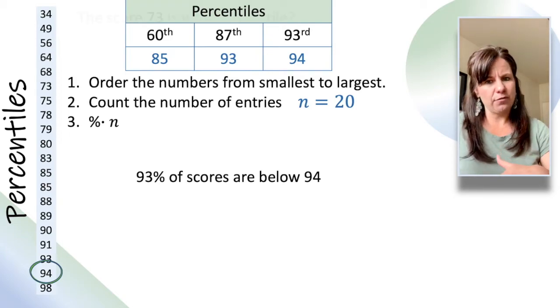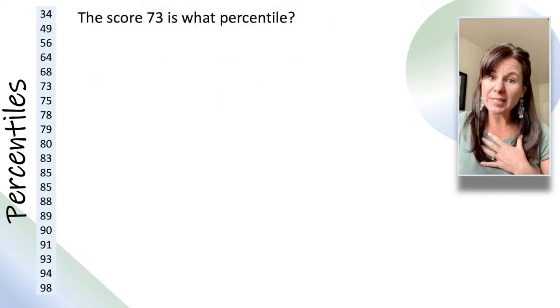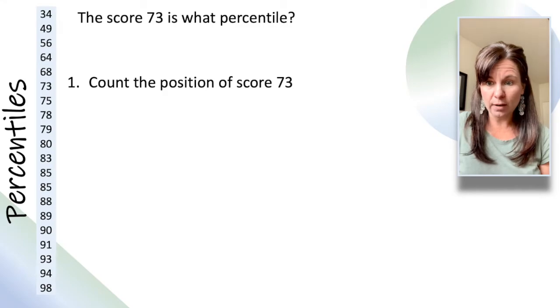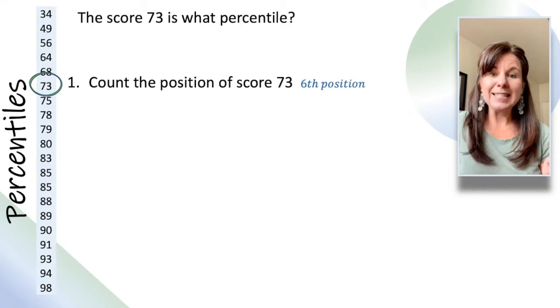Let's come at it from a different direction. What happens if I scored 73, and I want to know what percentile that is? Now, the first thing we do is count the position of score 73. So, it's 1, 2, 3, 4, 5, 6th position.